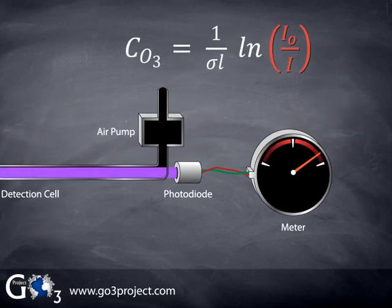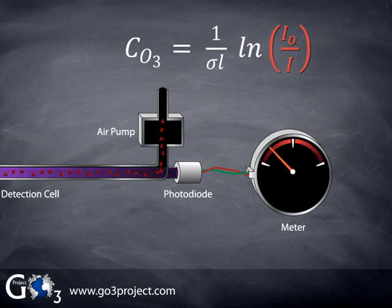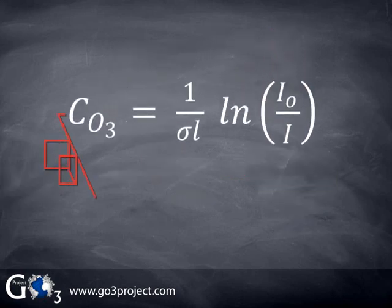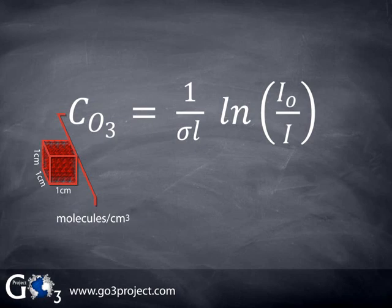We could calculate an updated ozone concentration each time we measure a new value of either I0 or I, which is every 2 seconds. However, most applications don't require such a fast response time. Let's take a moment to examine the units of our calculation. The concentration of ozone is expressed in molecules per centimeter cubed. The units result because the units of the absorption cross-section are centimeters squared per molecule, and the units of path length are centimeters.